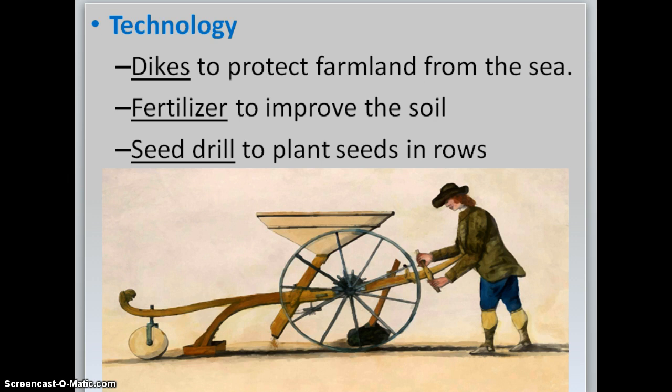They also figured out how to use fertilizer to improve the soil, the most common being manure — cow, goat, or whatever kind of poop they had. They also invented the seed drill, a machine they would row through the land. As they went, it would pour out seeds very gently, you could tamp down the ground around them, and plant seeds very quickly compared to the past.